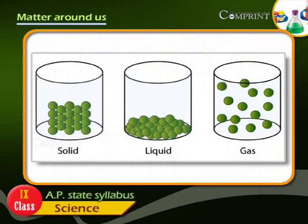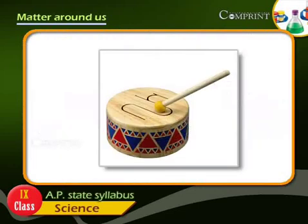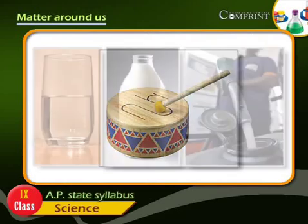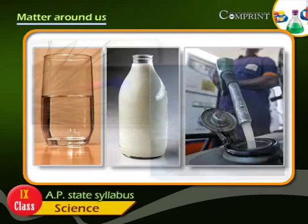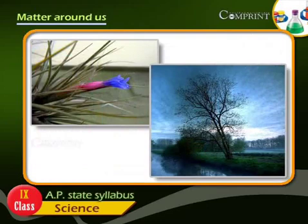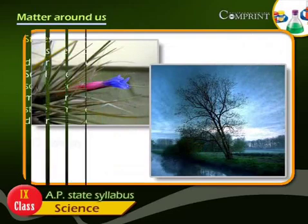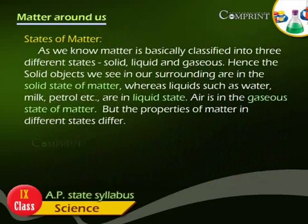The solid objects we see in our surroundings are in the solid state of matter. Whereas liquids such as water, milk, petrol, etc. are in liquid state. Air is in the gaseous state of matter. But the properties of matter in different states differ.